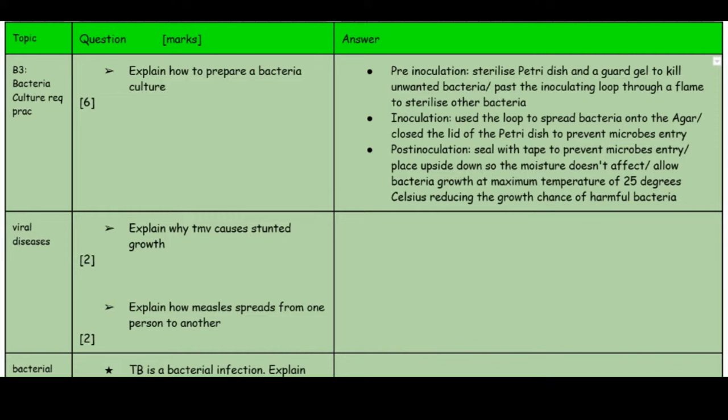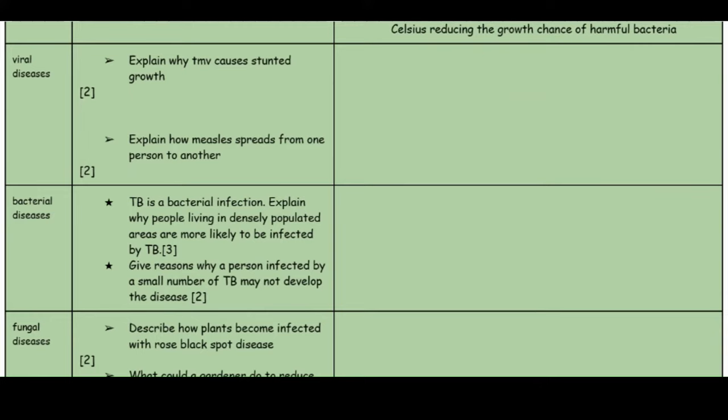Place the petri dish upside down so that moisture doesn't fall downwards and affect the culture. Allow the bacteria to grow at a maximum temperature of 25°C. Anything higher than 25°C could cause very harmful bacteria, because it could then survive in body conditions and therefore be harmful to us.